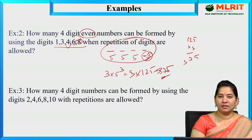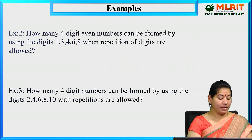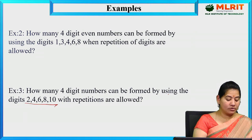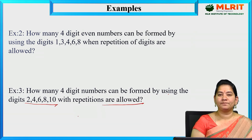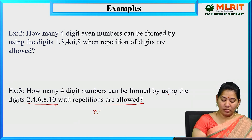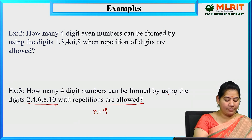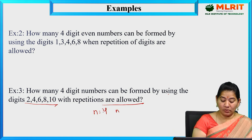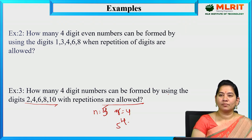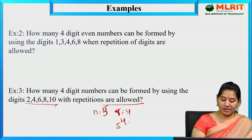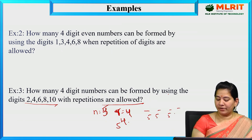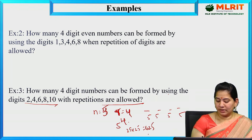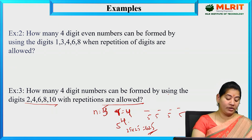The next question: how many 4-digit numbers can be formed using the digits 2, 4, 6, 8, 10 when repetitions are allowed? Here n is equal to 5 and r is equal to 4. The answer is 5 power 4 = 5 × 5 × 5 × 5 = 625.